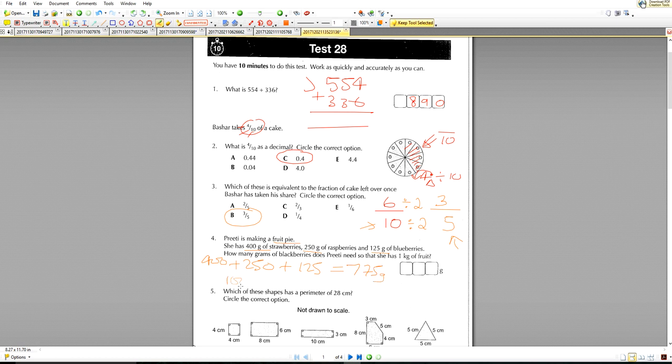Now, because we want to get to 1000 grams, we've got to work out the difference between 1000 and 775. That'll give us an answer of 225 grams.